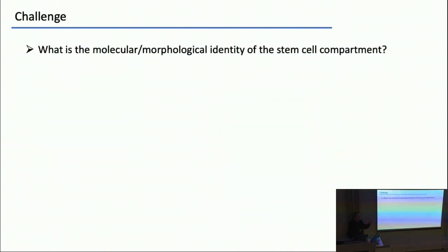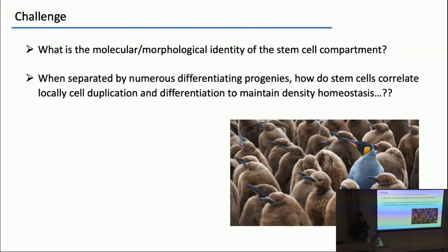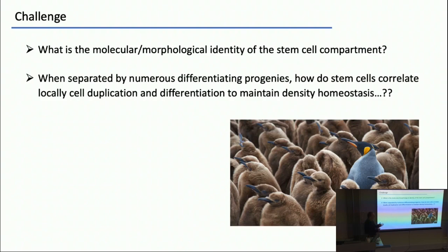So here's the challenge. What is the molecular and morphological identity of the stem cell compartment? Is it just A-singles? Is it A-pairs? How far does it extend? But most importantly: how do you regulate the perfect balance locally between duplication and differentiation? These stem cells are separated from each other by long distances — four, five, six, ten cell diameters — but they locally coordinate duplication and loss. This is the problem of stem cell regulation in an open niche.